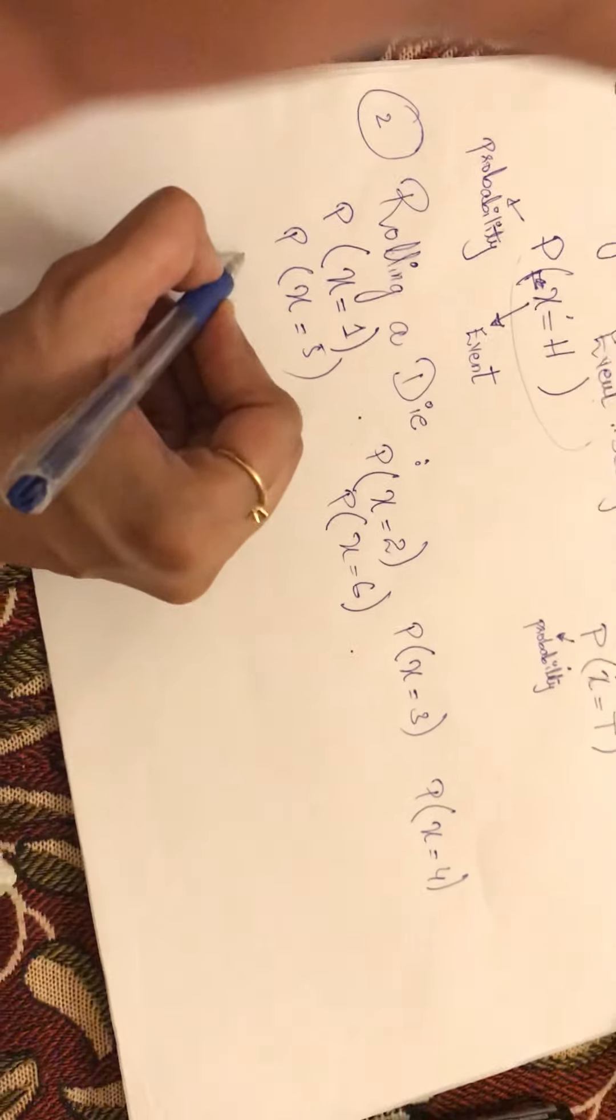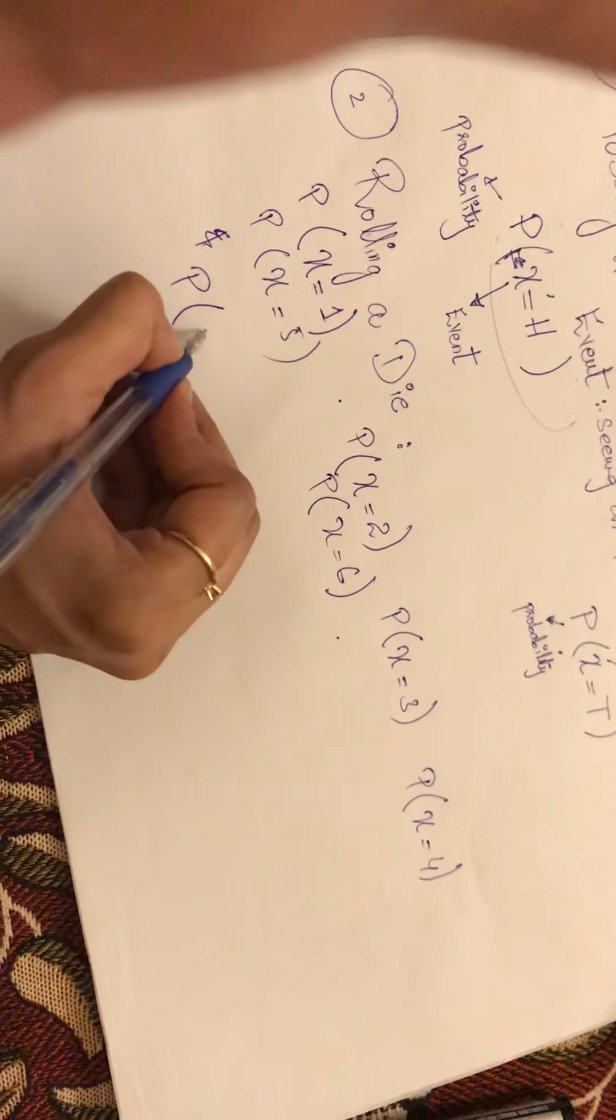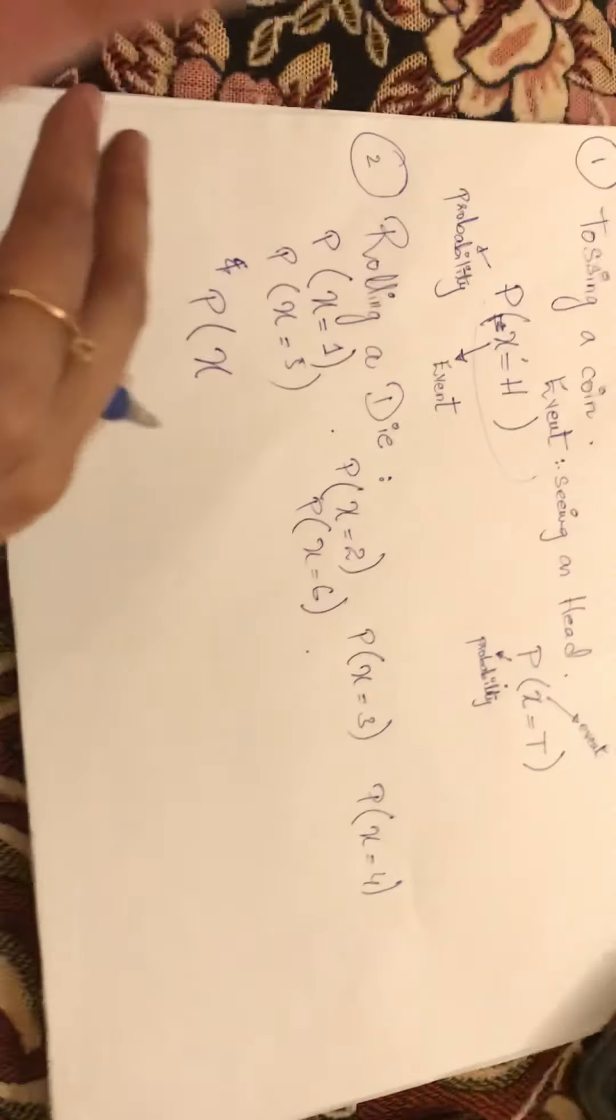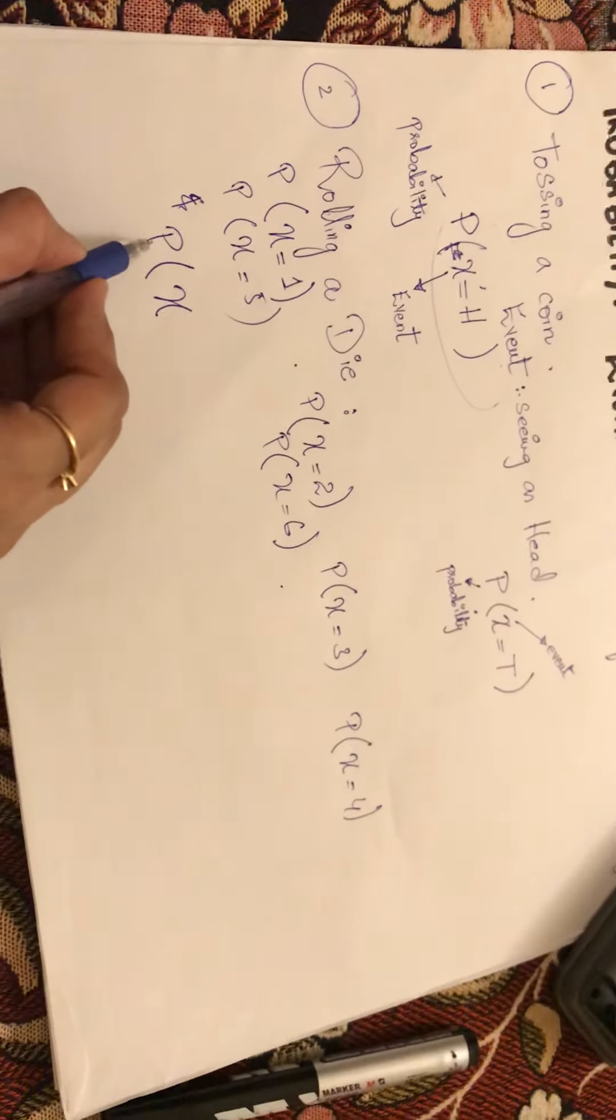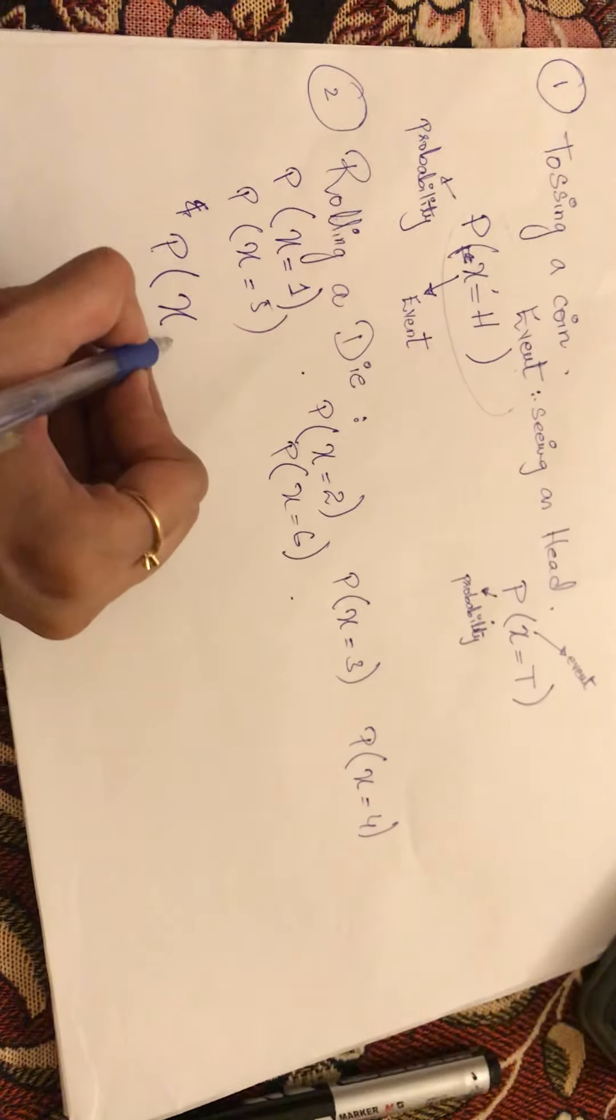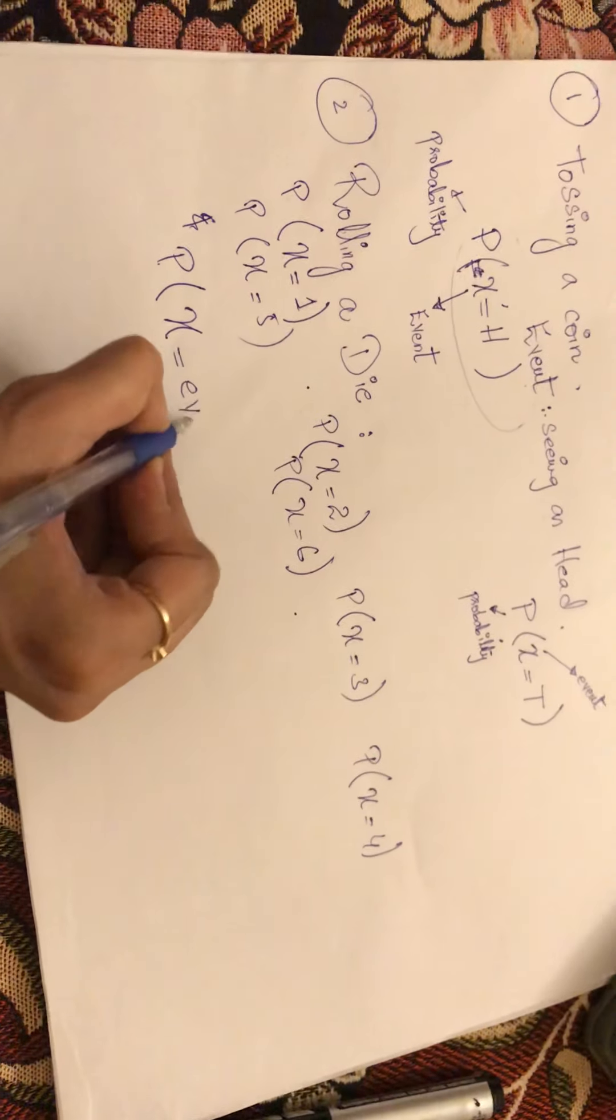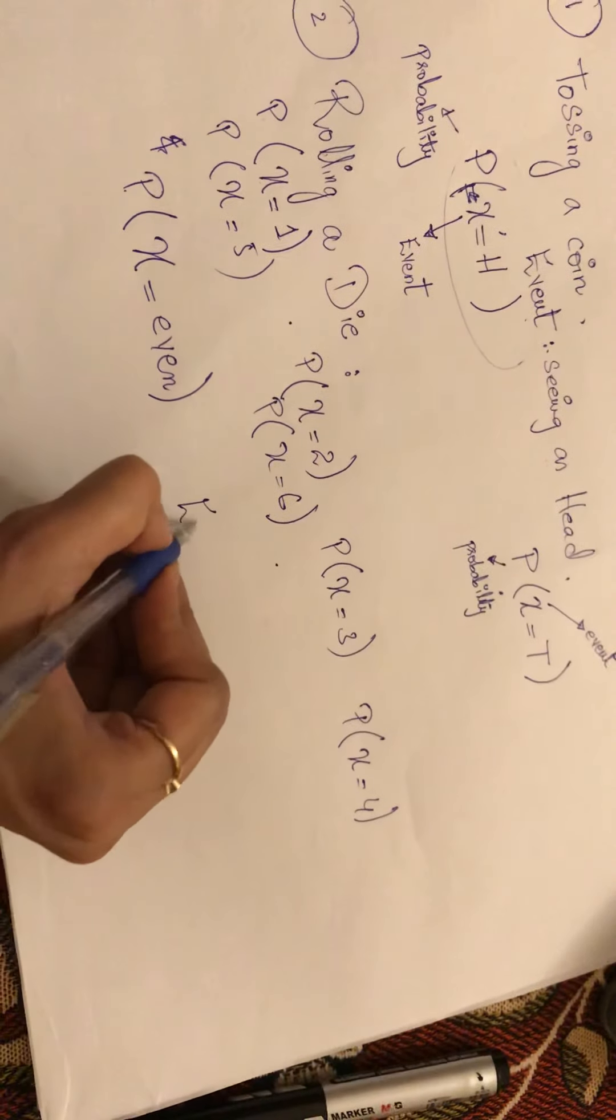We are going to find probability afterwards - don't worry, I'll give you another video regarding it. But we are only talking about events right now. Probability, bracket open, X signifies the event that it is an even number.